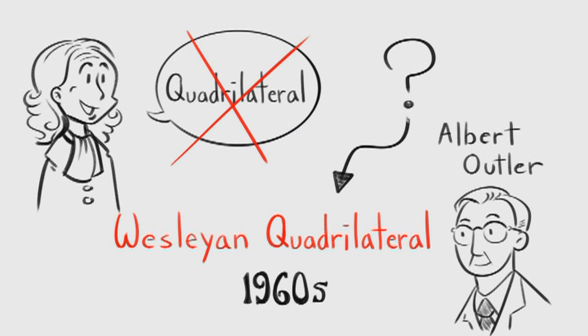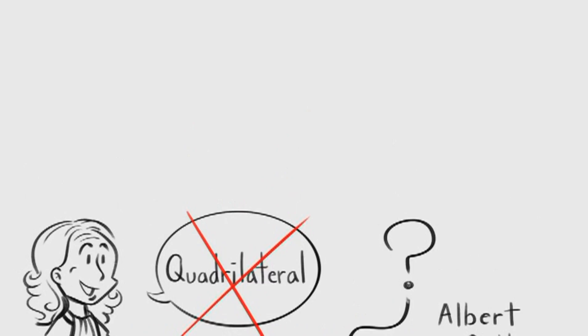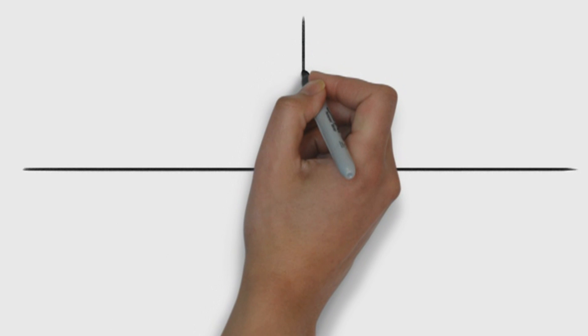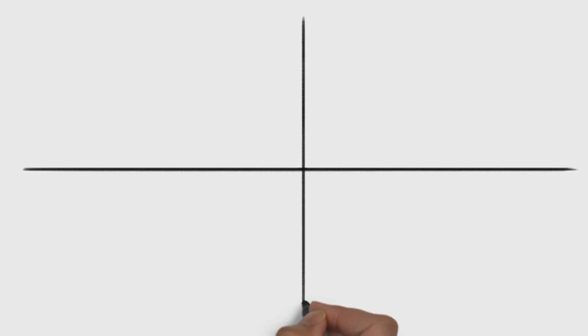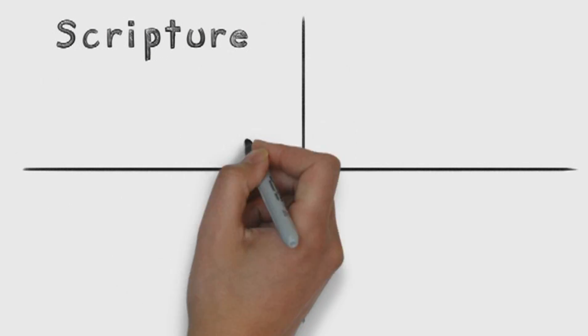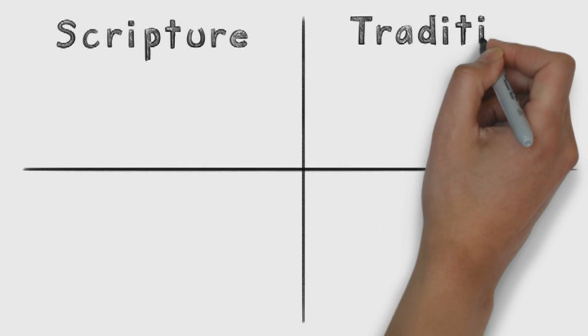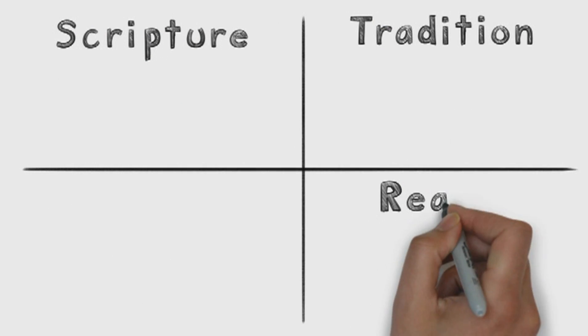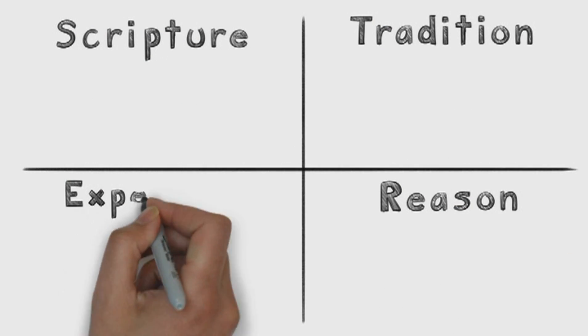But what is it? The Quadrilateral is comprised of the four sources through which we gain knowledge about God — Scripture, Tradition, Reason, and Experience.